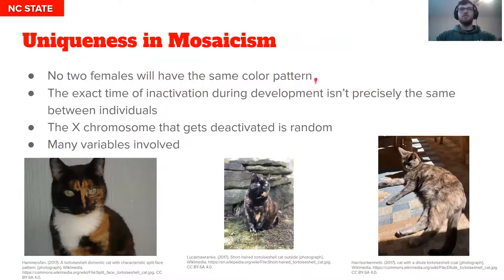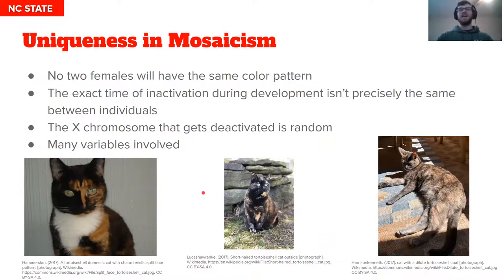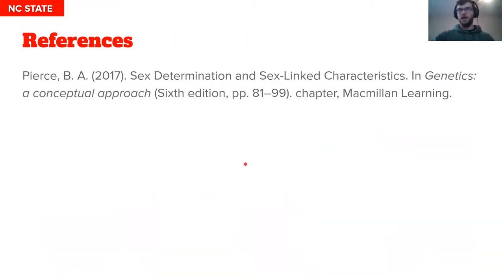Something else important to note is with mosaicism, you're going to have this uniqueness. You're never going to have the same coloration pattern between females because whichever chromosome is active or inactive is going to be a random process, and it's never going to be the exact same cell stage when it happens, and the actual proliferation of the cells is never going to be exactly the same between each individual's development. Here are a few different tortoiseshell cats and you can see none of them look the same — they all have different colorations. So thank you, and that concludes my presentation on the Lyon hypothesis.